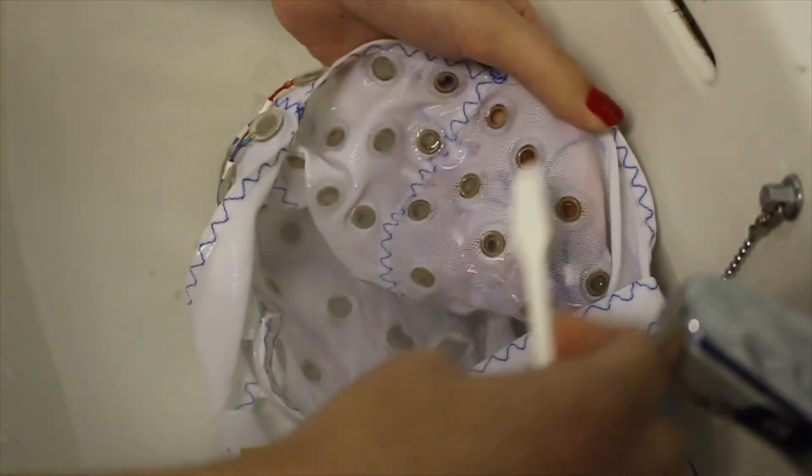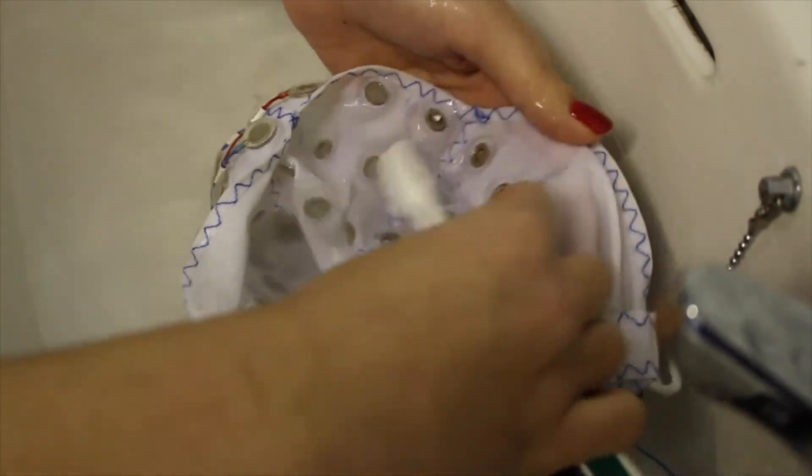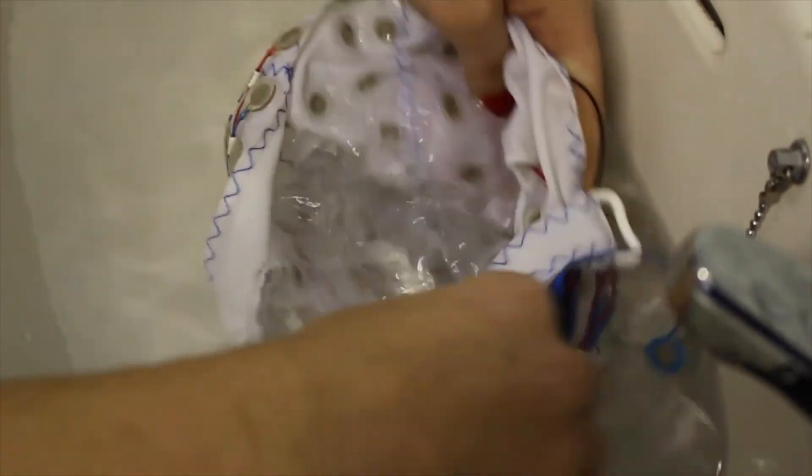Then take a soft toothbrush and gently clean the inside of the cap. Empty the sink and rinse the cap with clean water to get rid of any remaining gel.